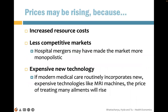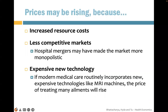On the price side, prices may be rising because of increased resource costs — it's simply getting more expensive to produce certain types of healthcare. Second is less competitive markets. We know that hospitals operate in a monopolistic market, and hospital mergers have made this market more monopolistic over time. The third factor is more expensive new technologies. If modern medical care routinely incorporates expensive technologies like MRI machines, the price of treating many ailments will rise.